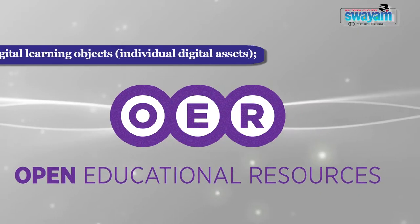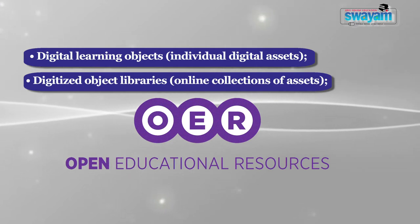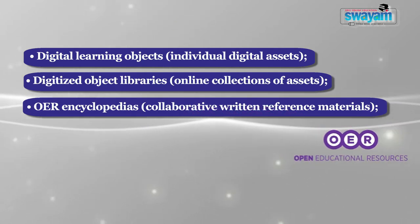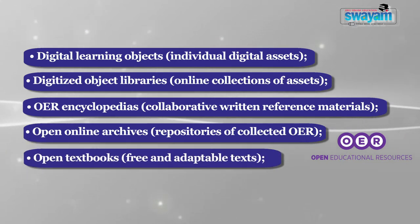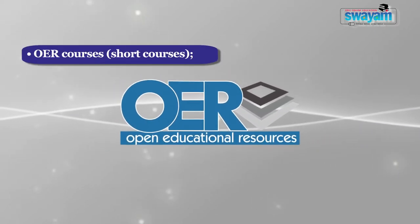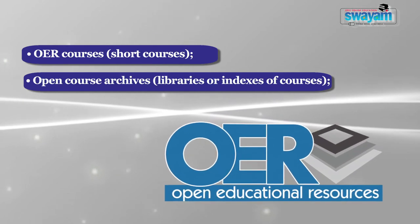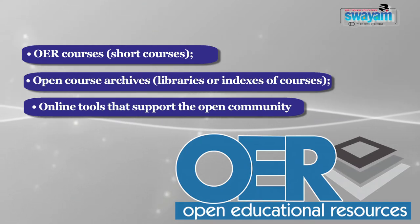Although there is no consensus regarding OER categories, Creative Commons has a useful list that includes the following subtypes: digital learning objects, which are individual digital assets; digitalized object libraries, which are online collections of assets; open educational resource encyclopedias, which are collaborative written reference materials; and open online archives, which are repositories of collected OERs. Next are open textbooks, which are free and adaptable texts, open coursewares, open online university courses and programs, short OER courses, open course archives, and online tools that support the open community.